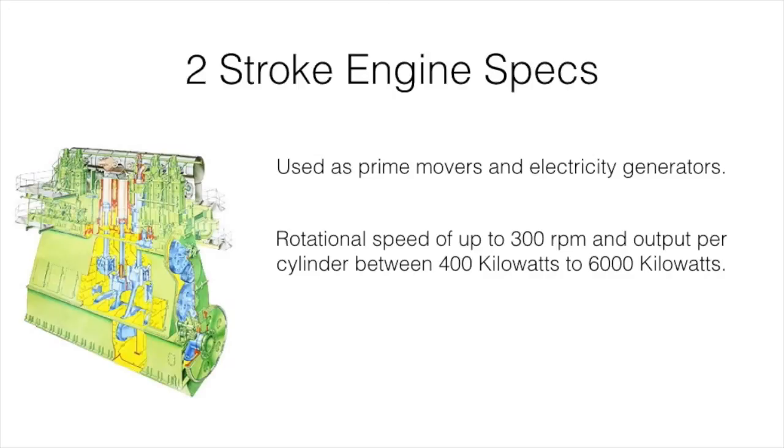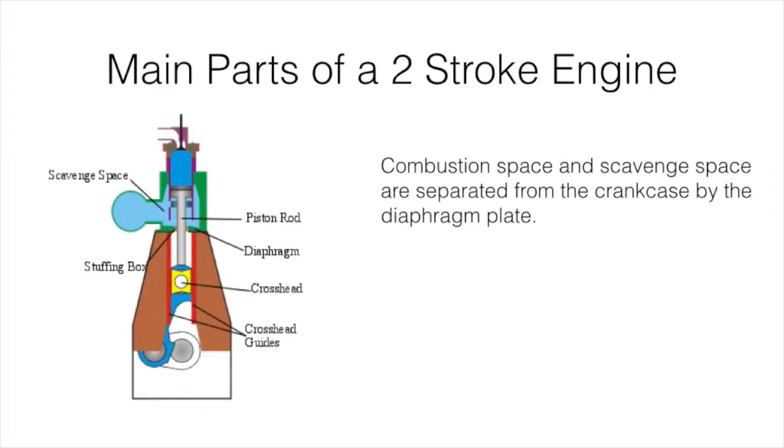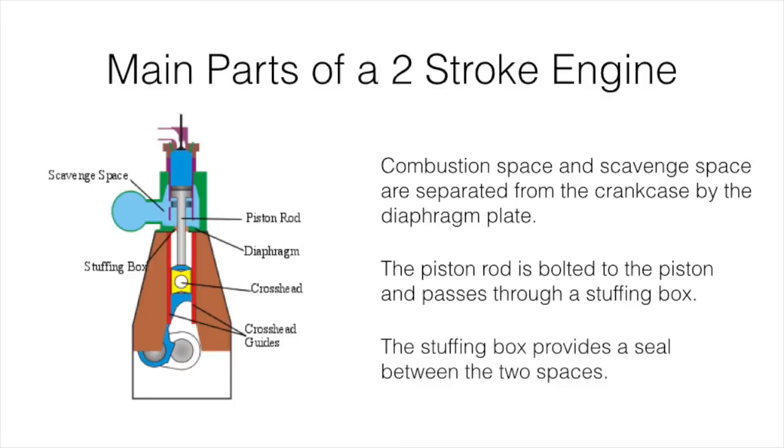Output per cylinder is between 400 kilowatts to 6000 kilowatts. The majority of two-stroke engines encountered at sea are of the crosshead type.